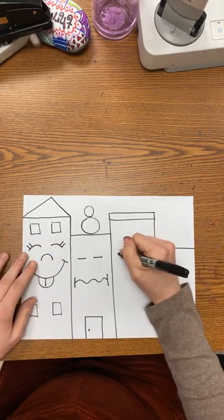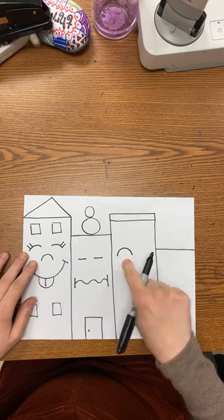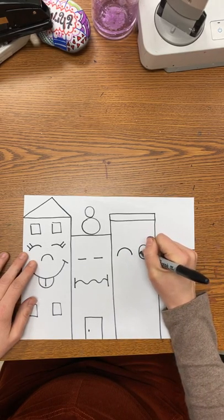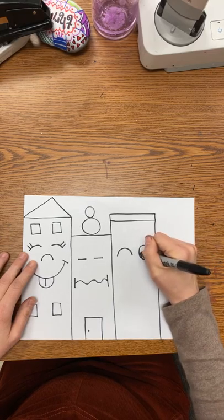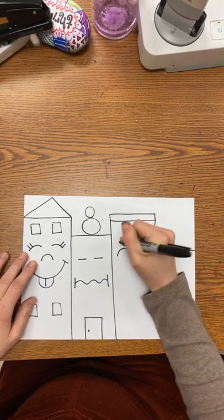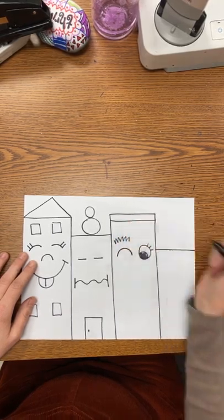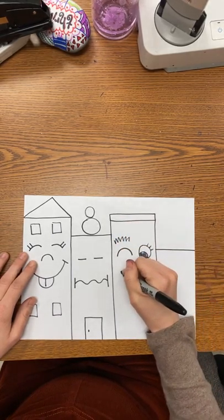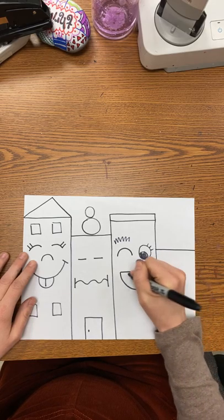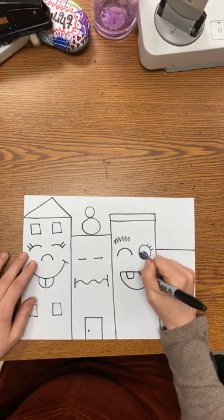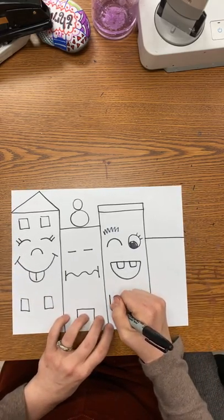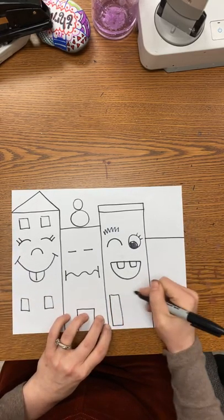This one right here will have a winking, which is like a rainbow, and an open eye. And I could color that in if I want. Add some eyelashes, maybe an eyebrow here, and a big open mouth. And you know what? Maybe this one's got two teeth. And we'll do some tall windows on this building.